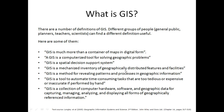There are various definitions of GIS given by different groups of people — planners, teachers, and scientists — and each may be useful for different purposes. For example: GIS is much more than a container of maps in digital form. A GIS is a computerized tool for solving geographical problems. GIS is also a special decision support system. GIS is a mechanized inventory of geographically distributed features and facilities.